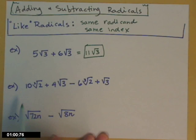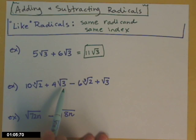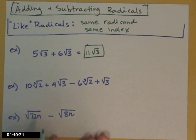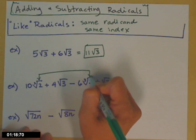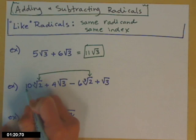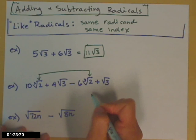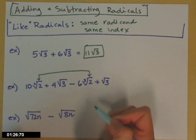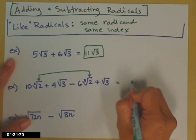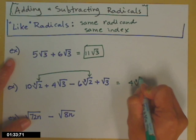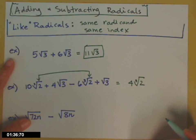My second example, I've kind of mixed things up. I have 10 times the cube root of 2 plus 4 times the square root of 3 minus 6 times the cube root of 2 plus the square root of 3. Your first thing is to figure out which radicals are like. The 10 cube root of 2 is like the 6 cube root of 2 — they both have the same index 3 and the same radicand 2. So I combine those: 10 of them minus 6 of them, altogether I have 4. Notice the cube root of 2 just keeps tagging along.